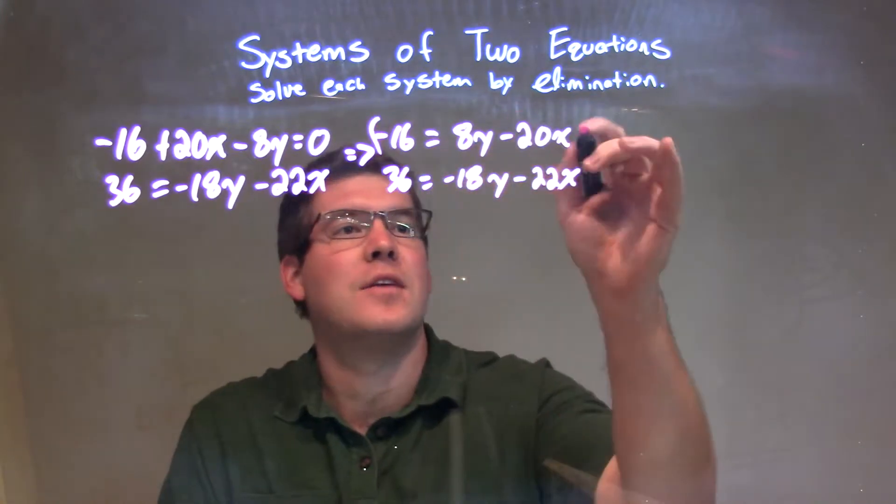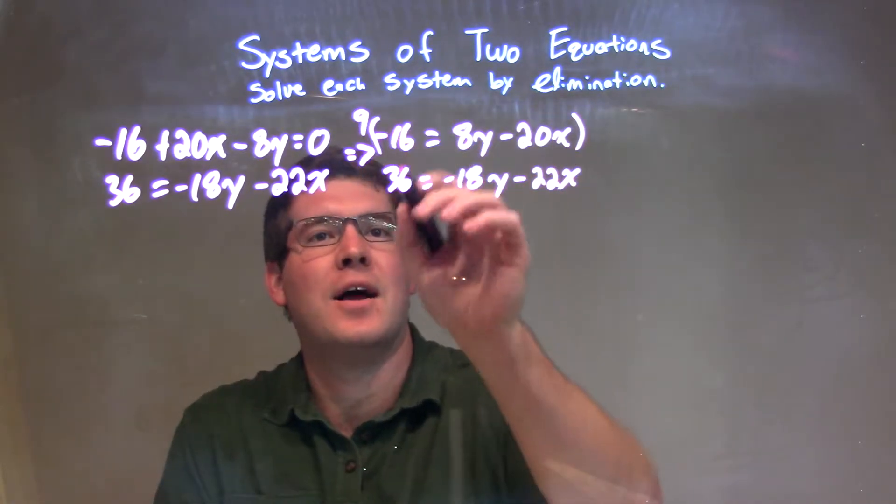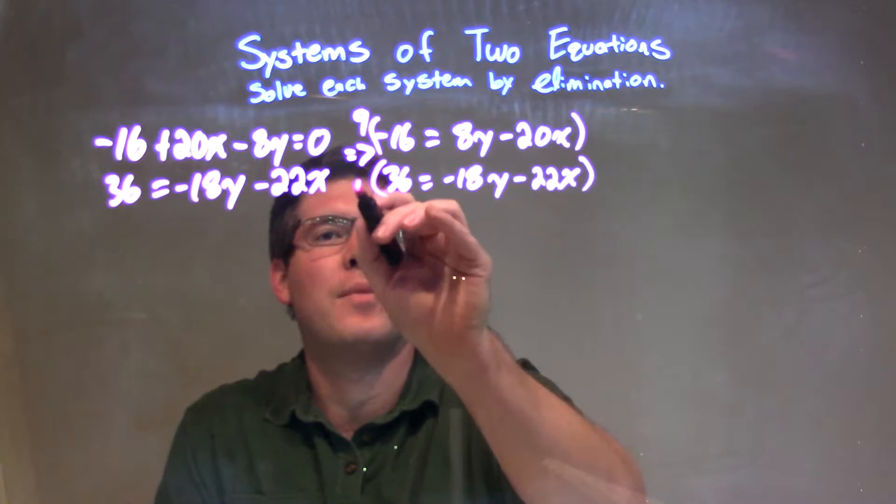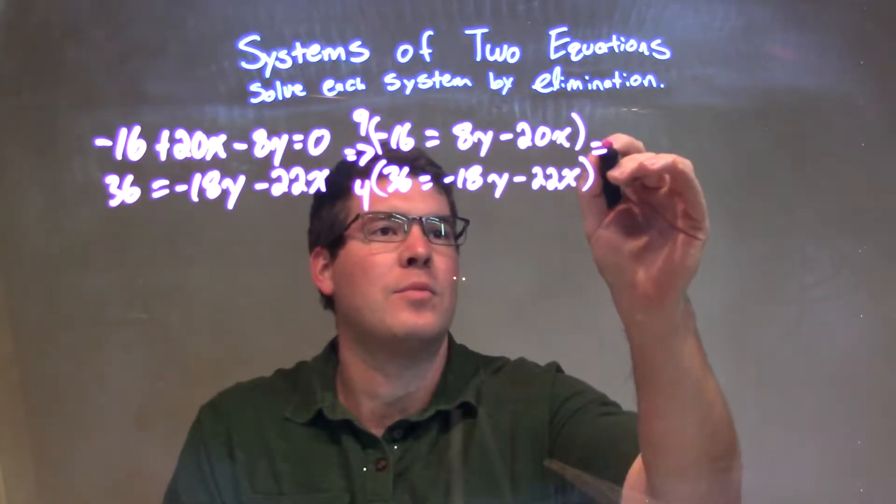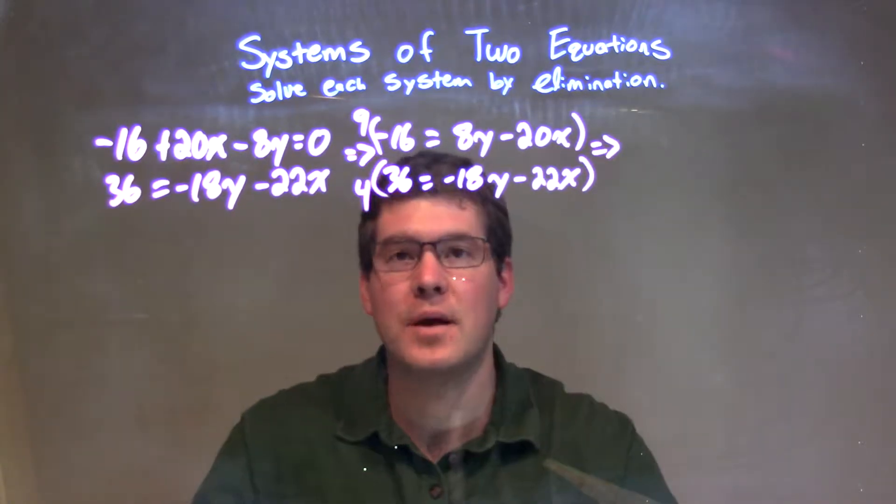I'm going to take the top equation, multiply it by 9, and the bottom equation, multiply it by 4. Now, we're going to get some large numbers here, but sometimes that just happens.